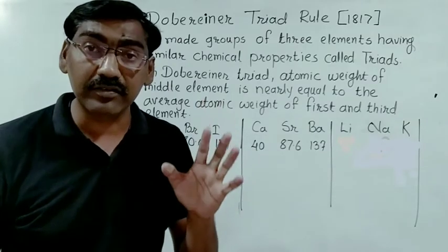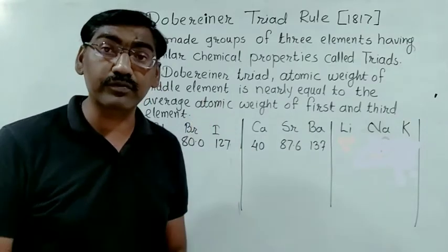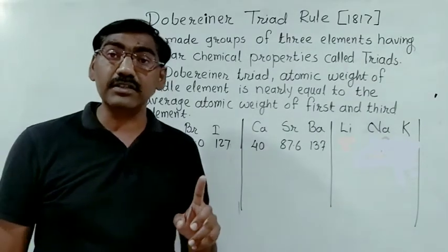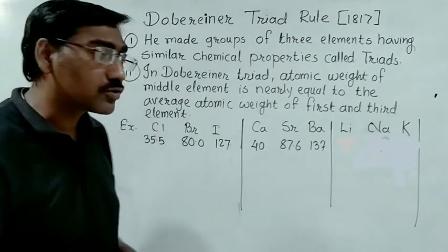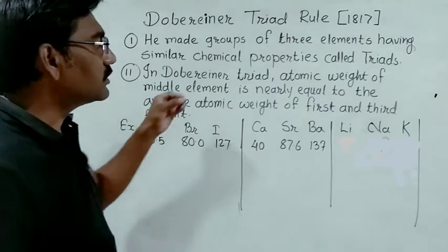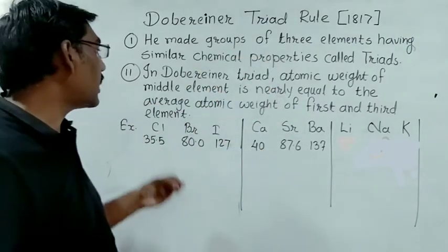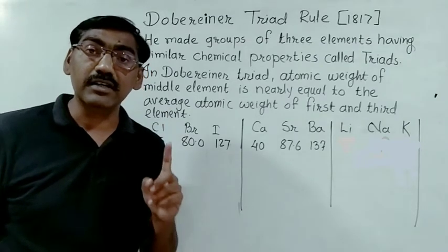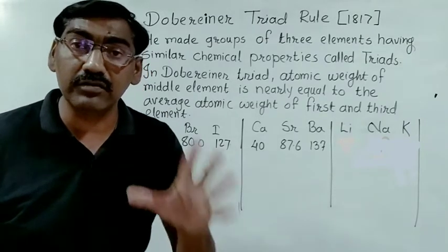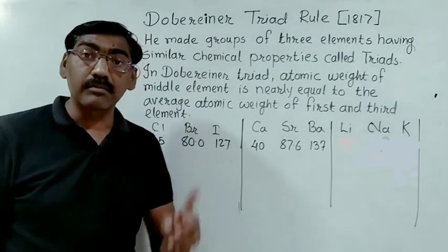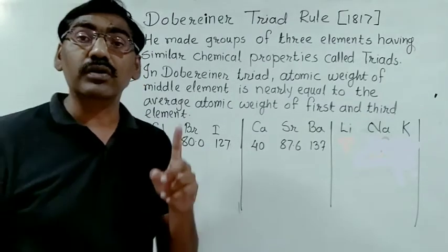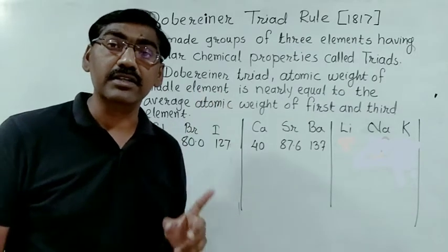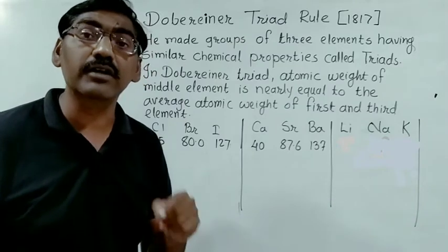Three elements are placed in different groups as triads based on their properties. The key observation is that the atomic weight of the first element and the third element, when averaged, gives the mean — and that mean is nearly equal to the atomic weight of the middle element.